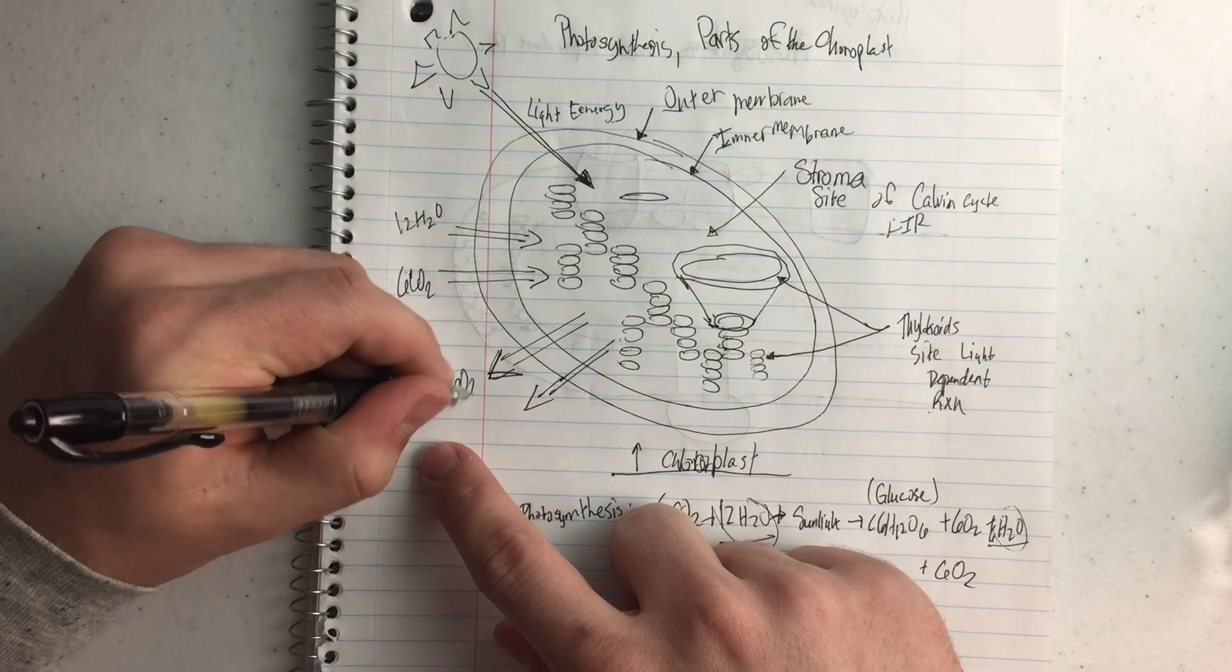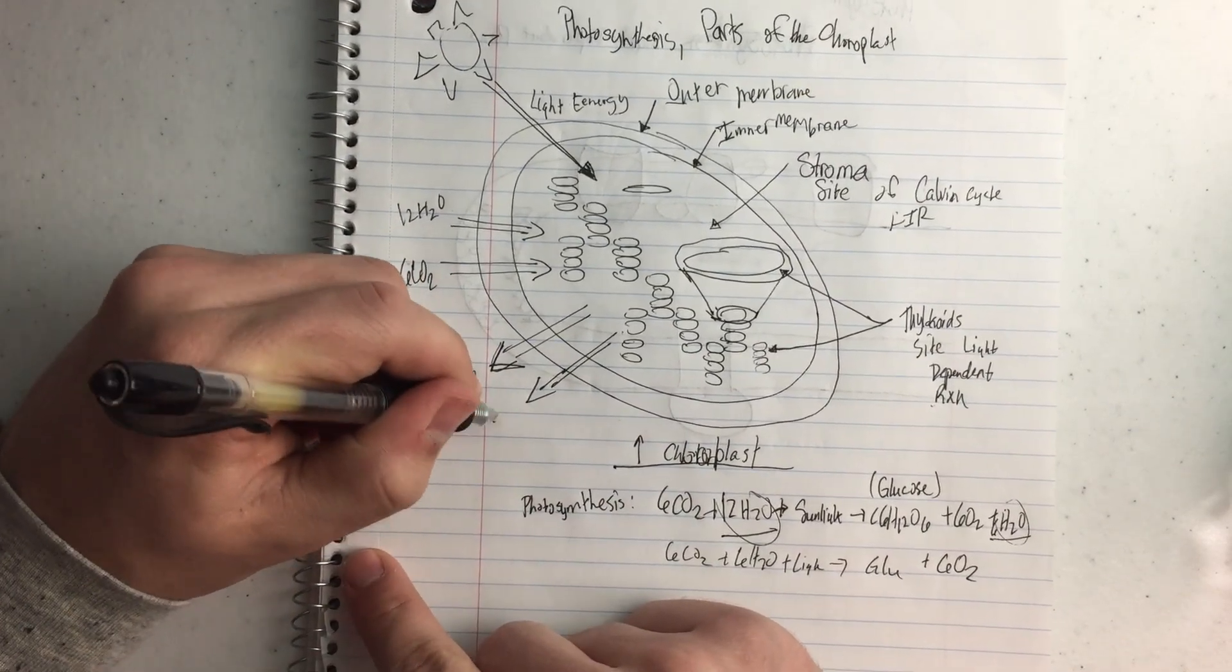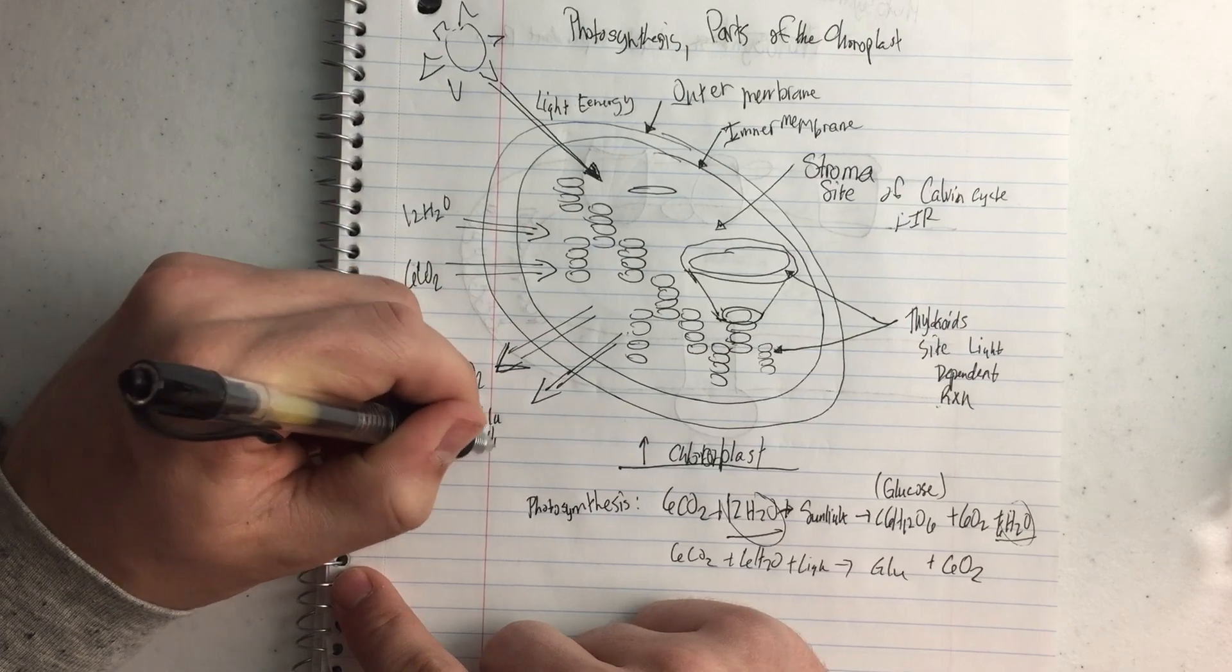And then the 6O2 are byproducts. And then the glucose, which is what we're trying to make, is the C6H12O6.